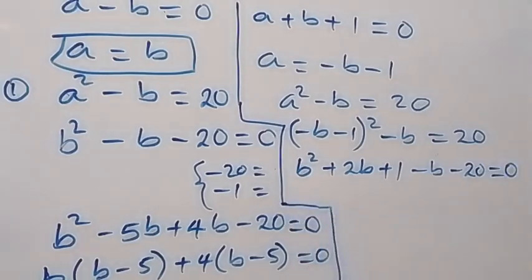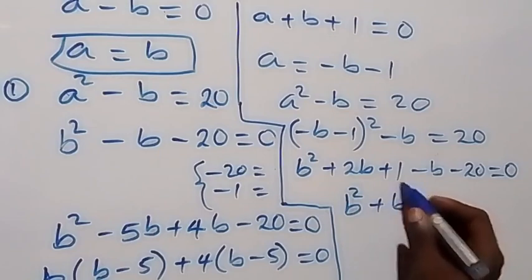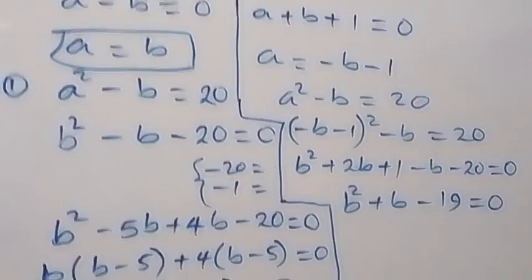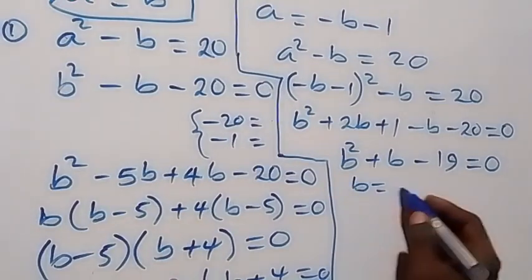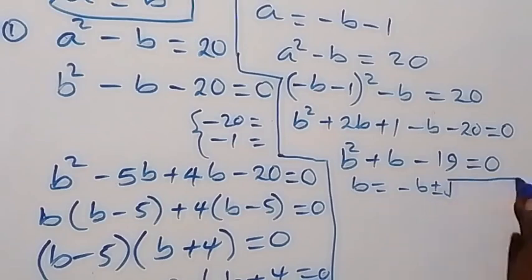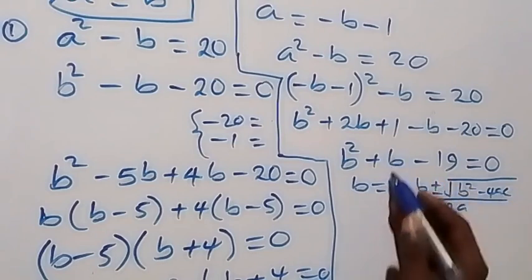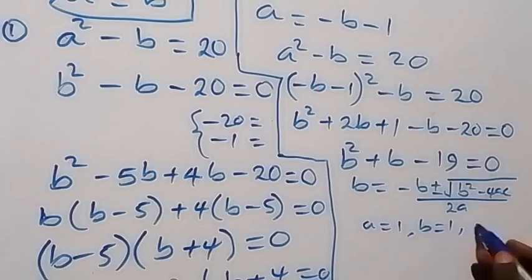Combining like terms, b squared plus (2b minus b) plus (1 minus 20) gives b squared plus b minus 19 equals zero. We solve this using the quadratic formula: b equals minus b-coefficient plus or minus square root of (b-coefficient squared minus 4ac), over 2a. In this formula, a equals 1, b-coefficient equals 1, and c equals minus 19.